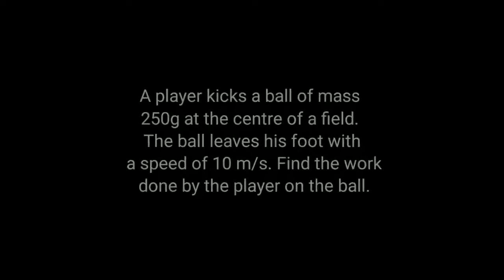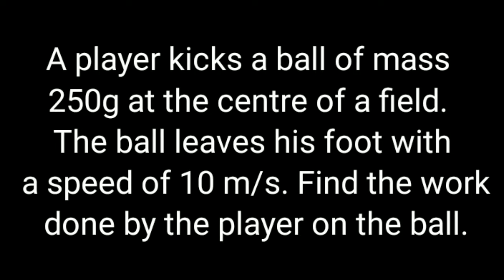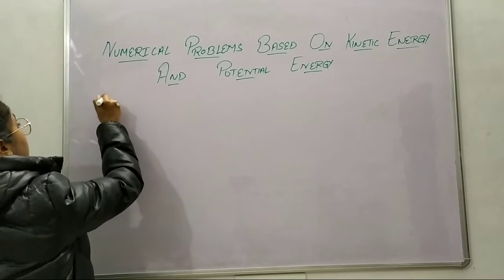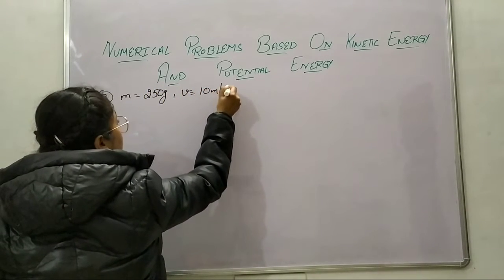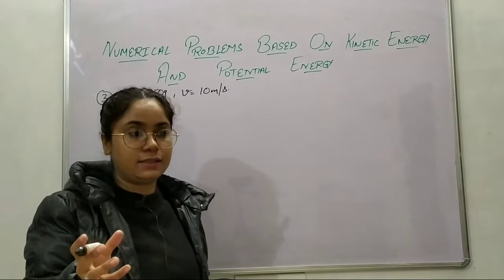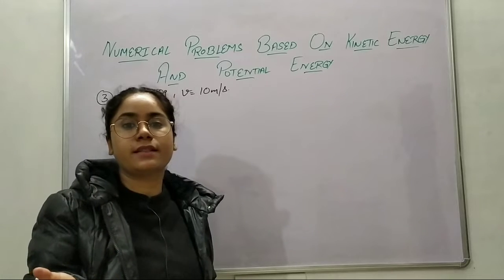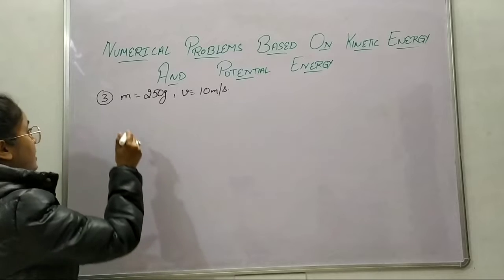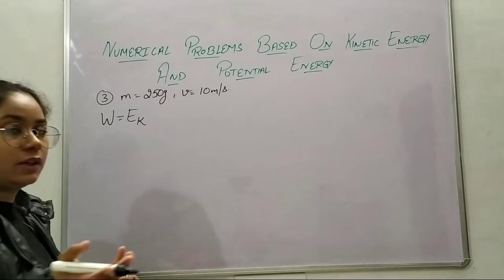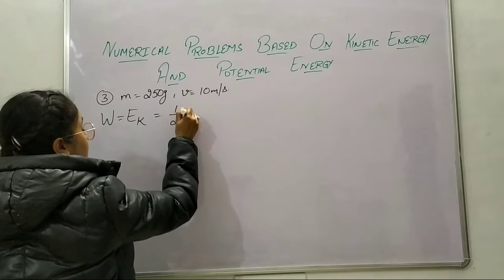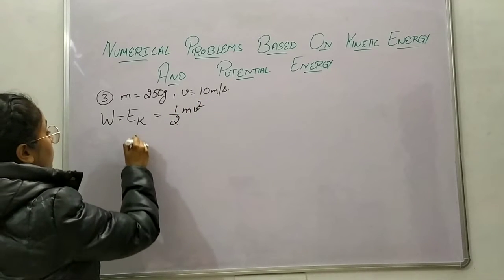In the next problem, a player kicks a ball of 250 grams at the center of the field. The ball leaves his foot with a speed of 10 meters per second. We need to find the work done by the player on the ball. You know that ability to do work is energy, so work and energy are the same thing. Kinetic energy is the amount of work done by the player on the ball.